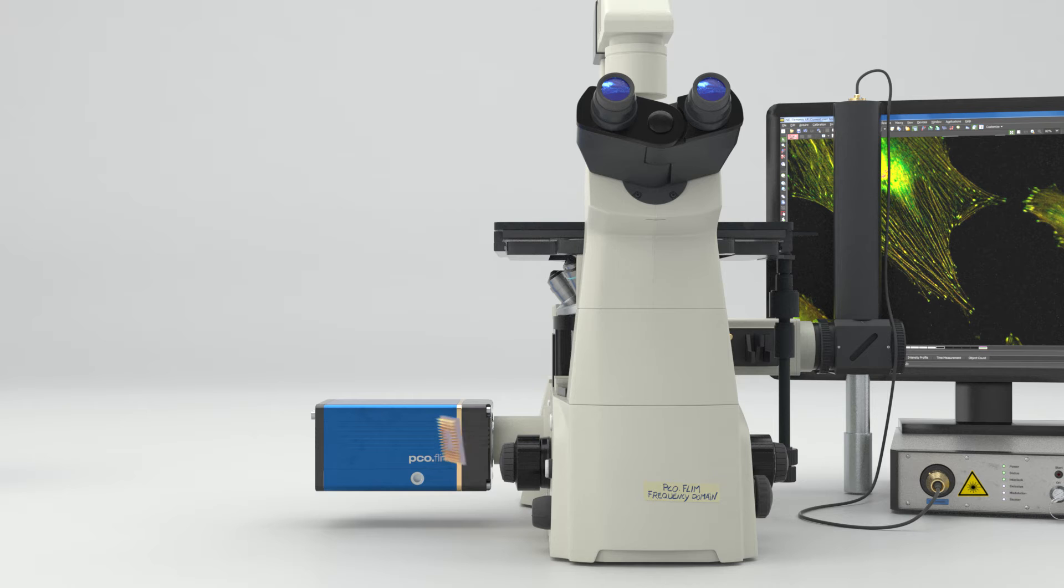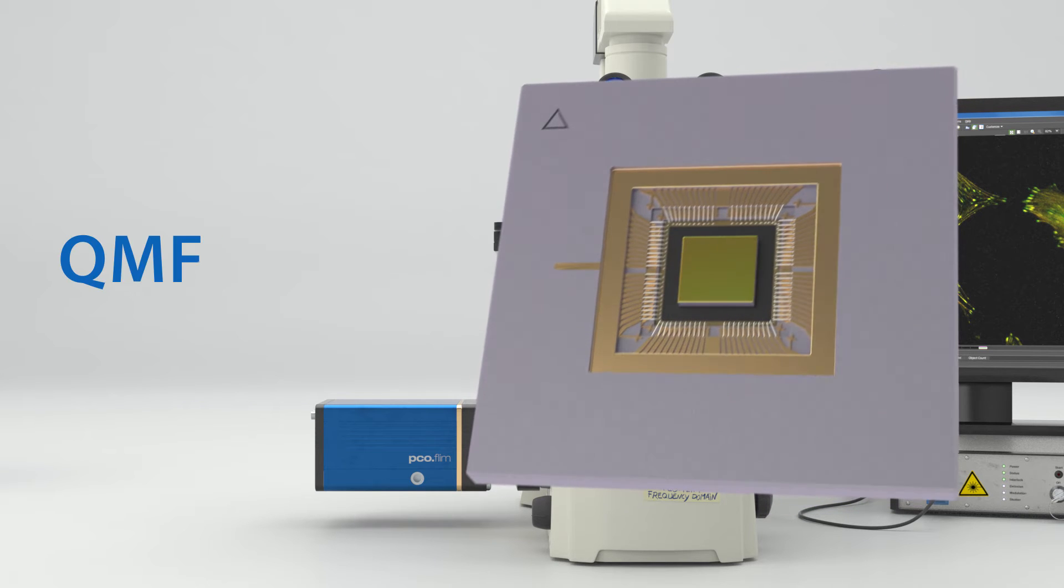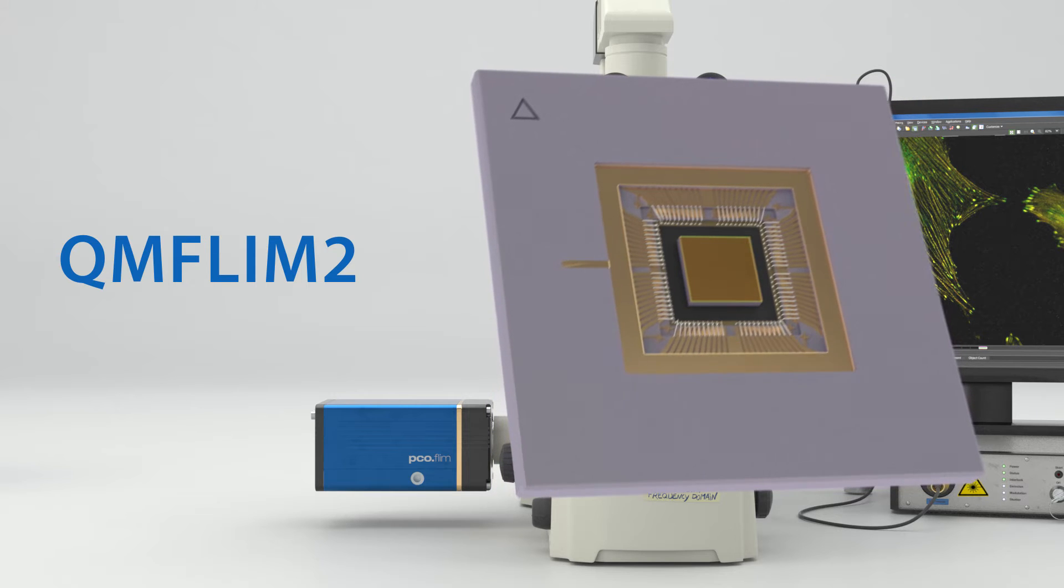By the development of a novel fast modulatable CMOS image sensor, the QM FLIM2, the so-called frequency domain method became more attractive.